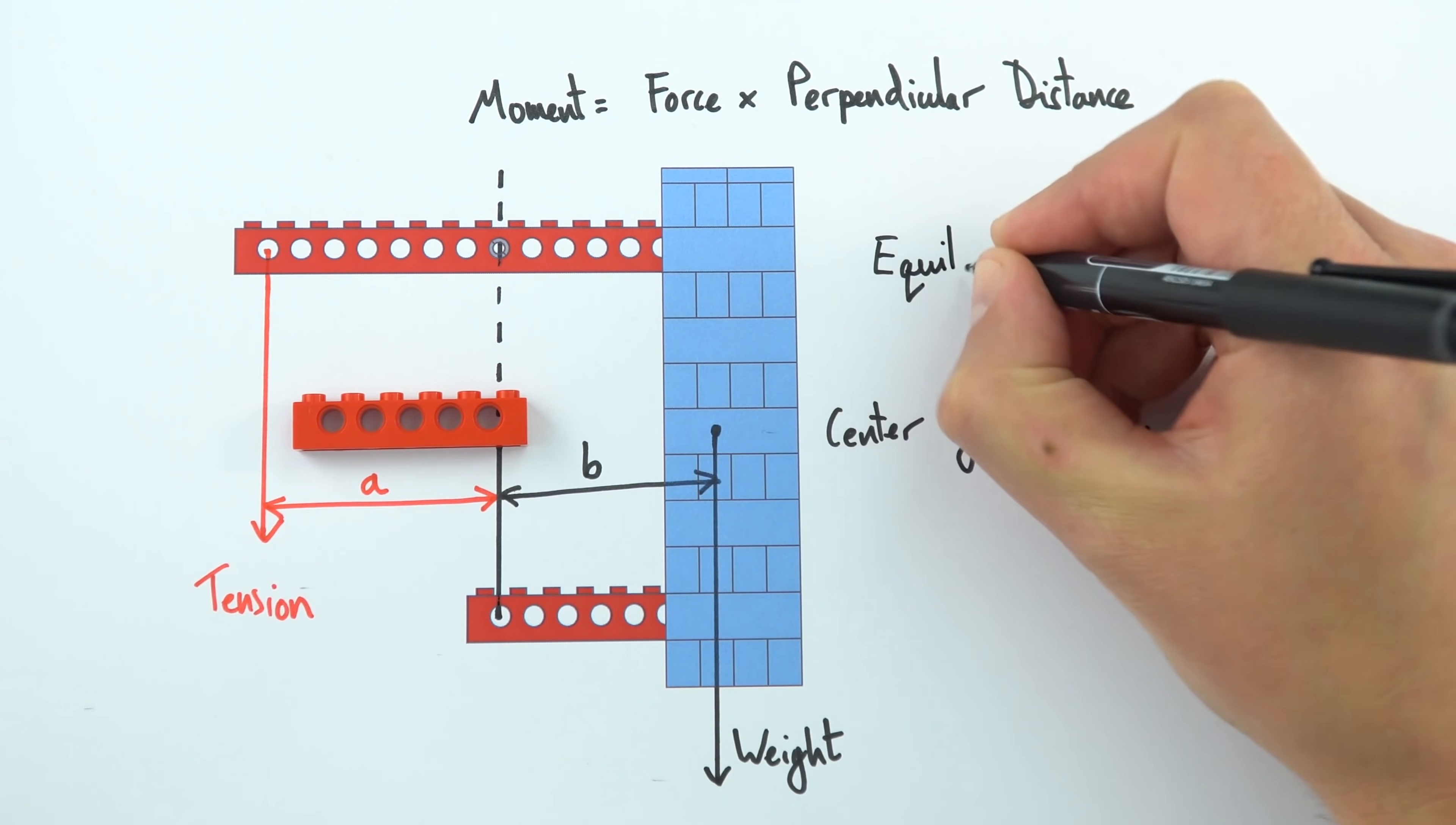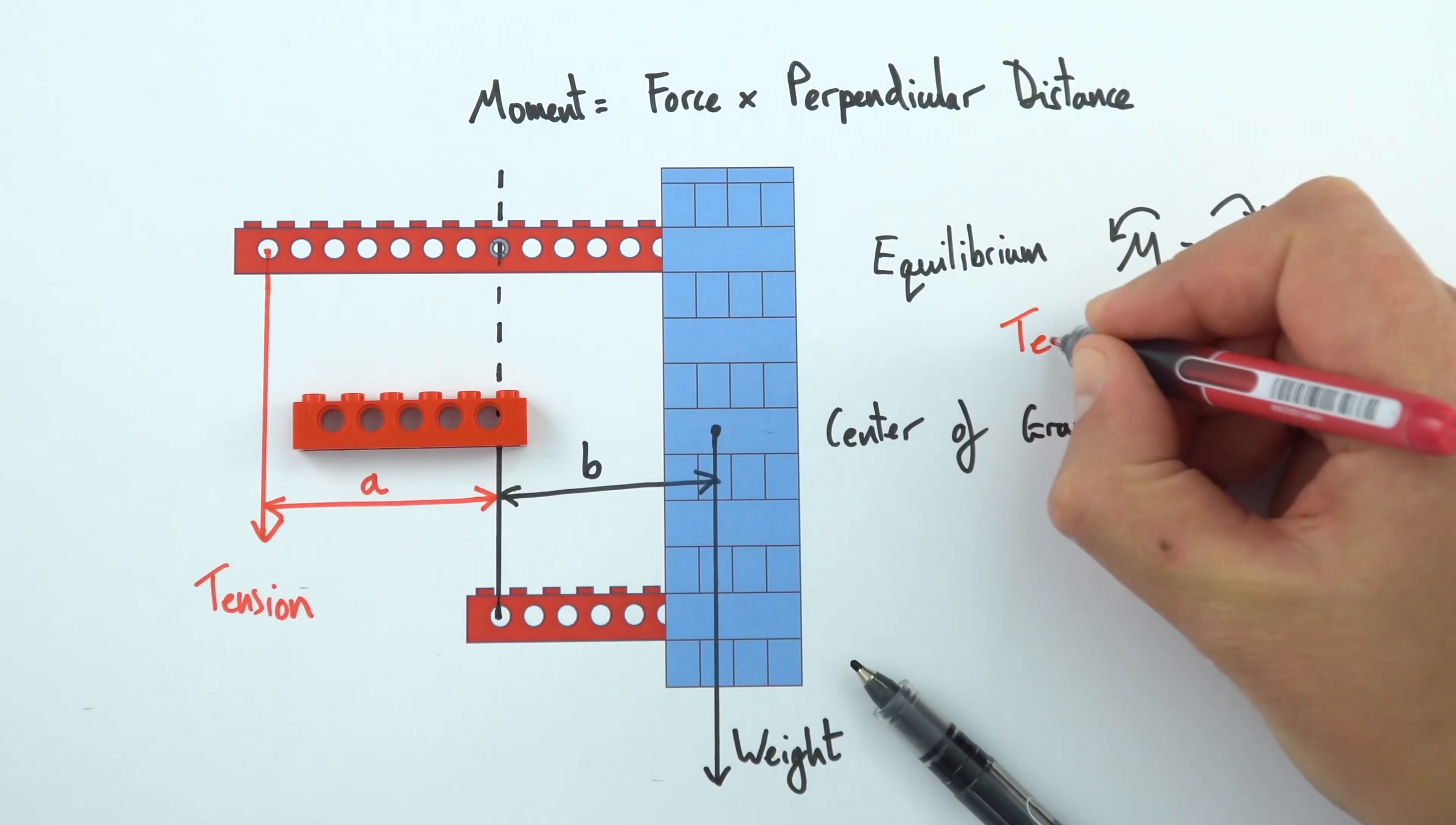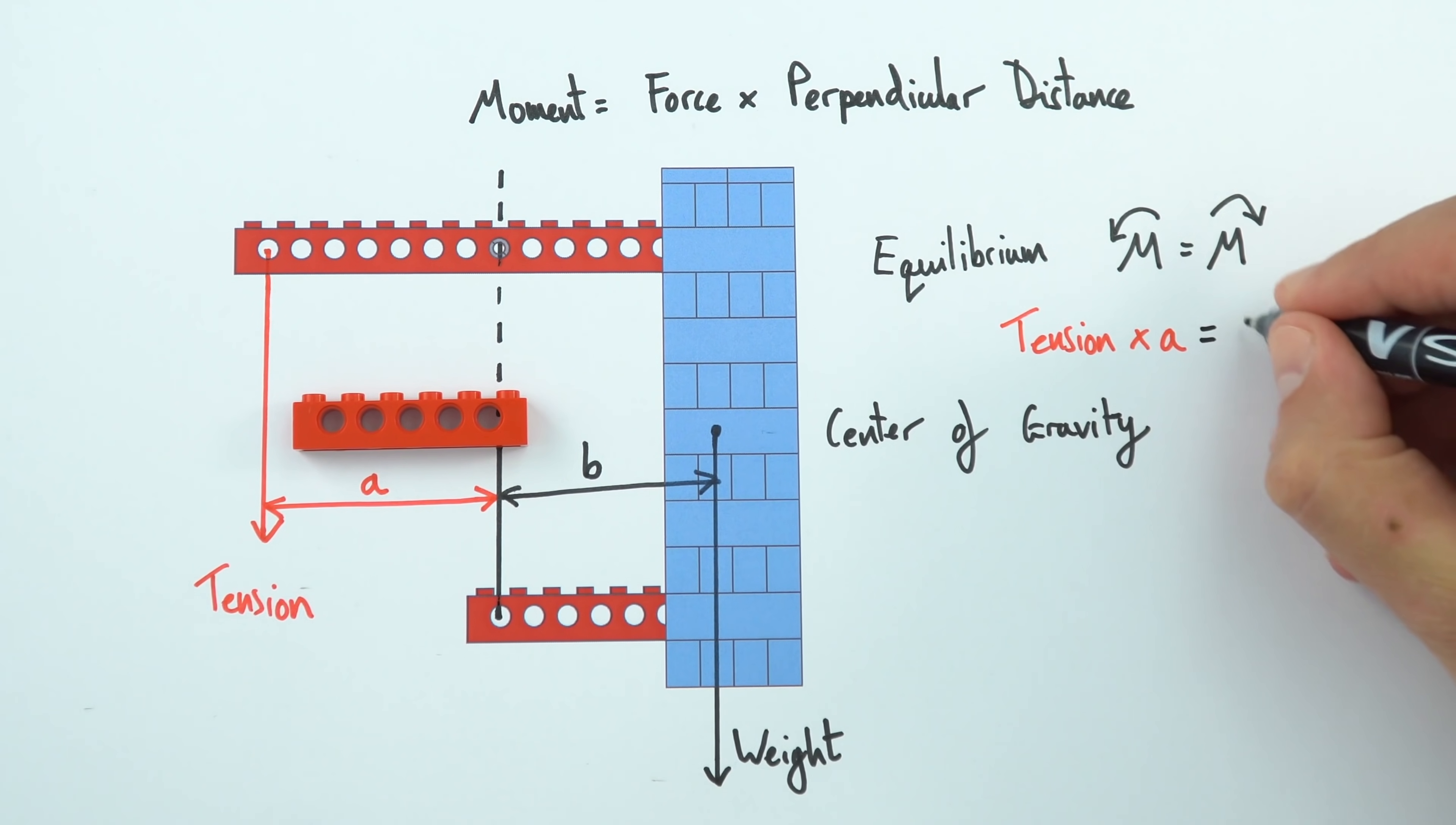Now for an object to be in equilibrium we can say that the moments which are anti-clockwise are equal to the clockwise moments. And in this case over here we can then say that the tension times the distance a is equal to the weight of that object